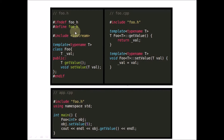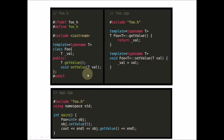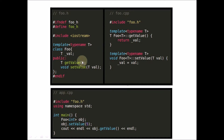You have included foo.h here, so this file will come in. When you try to instantiate foo with integer, the compiler will try to place integer at the place of T. But when the compiler goes to search for the actual definitions of getValue and setValue, it is not going to find them.